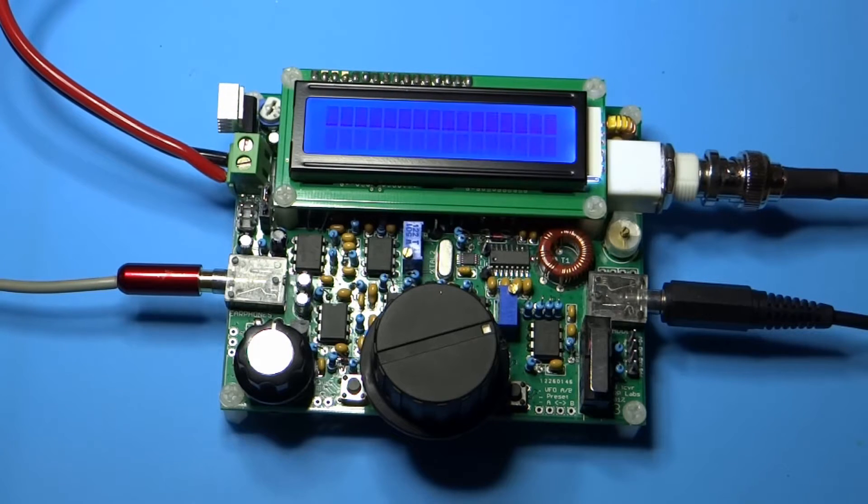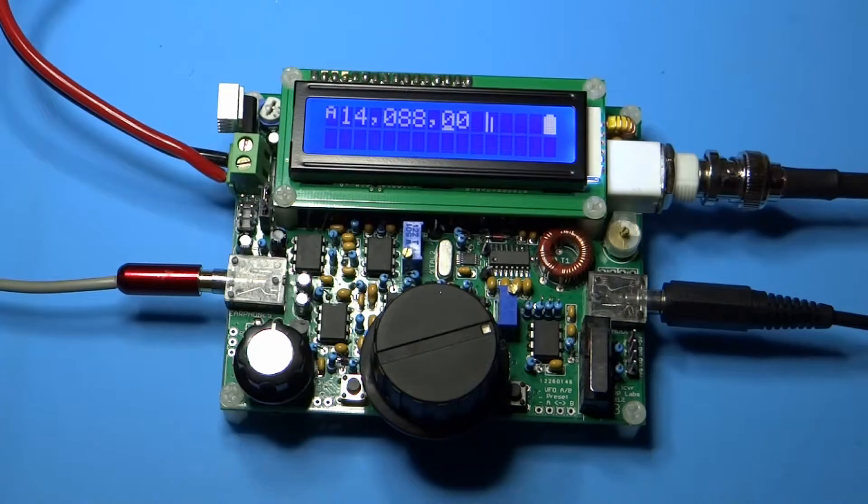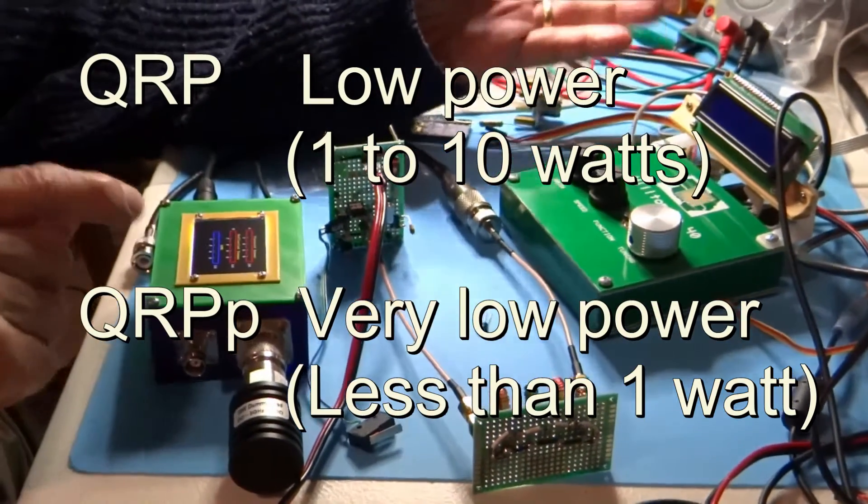Low-power operation, called QRP, is a special interest area in ham radio, and some operators take the challenge to a new level by limiting transmit power to the milliwatt range.